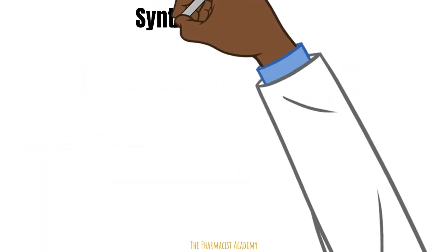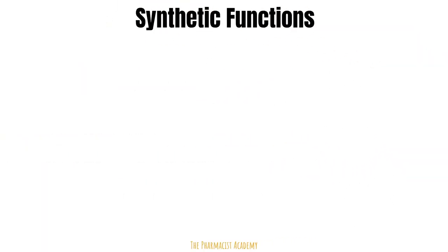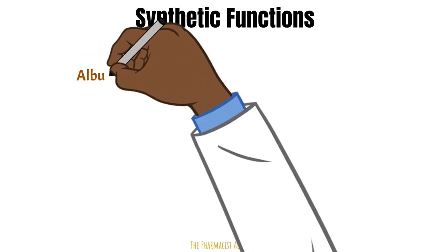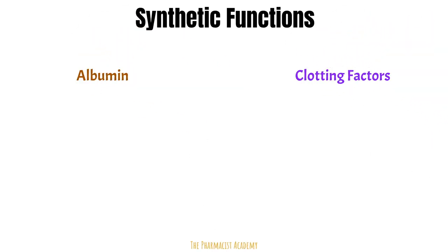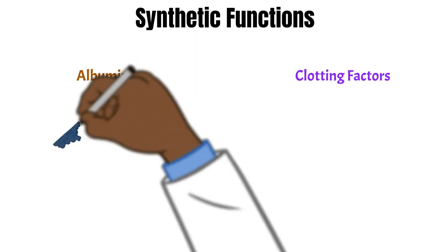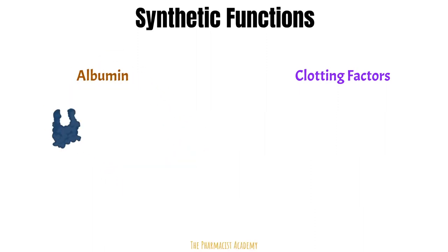Finally, we have the synthetic functions of the liver. The two things that the liver synthesizes that we'll focus on today are albumin and the clotting factors. Albumin is a protein in your plasma, and it helps keep the plasma in your bloodstream so it doesn't leak into other tissues. The pressure within the blood vessels that helps plasma stay inside is also termed oncotic pressure. It also serves as a transporter for many things in the body, including drugs by binding to them. Lastly, we have the clotting factors, which are important for clot formation.